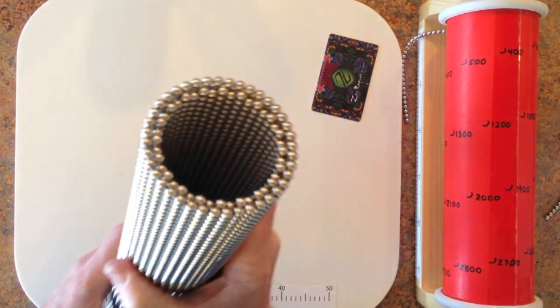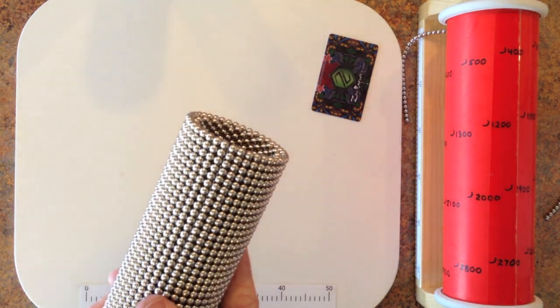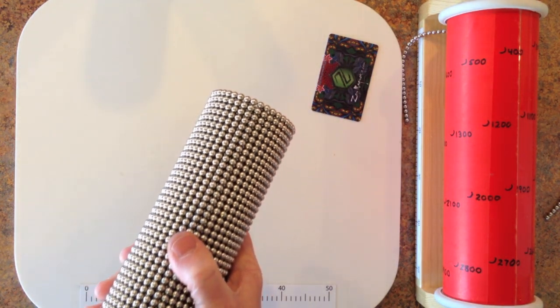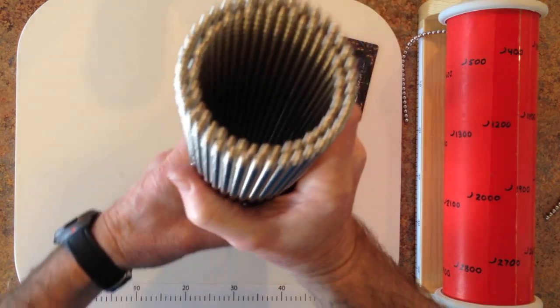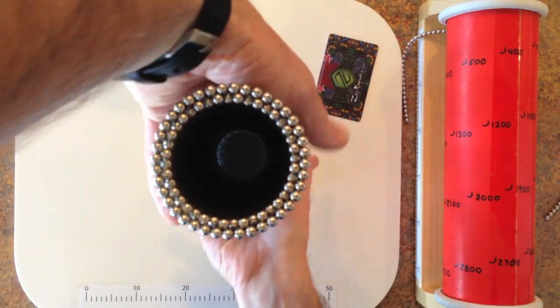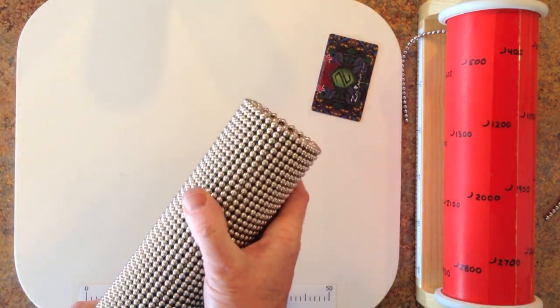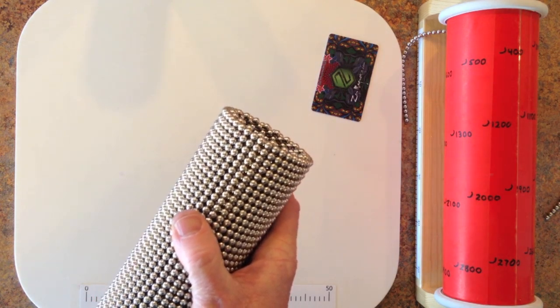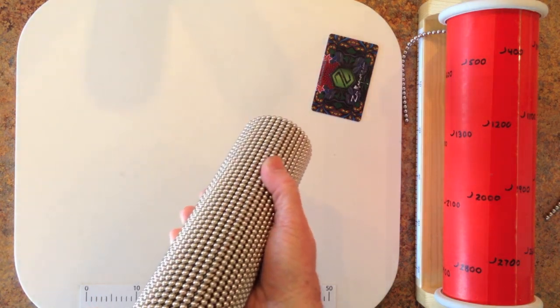Just like that. So you can see now, when you look on the end, it's a nice square end. As opposed to the inner wall having some protruding magnets.